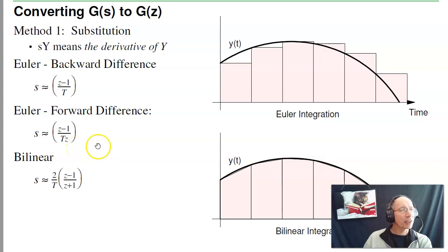Far more accurate is bilinear. What you do is draw out trapezoids. Take the two endpoints, connect them together. What that gives you is one half of the sum of the two times the width. Flipping it to give you 1 over s, the bilinear approximation is (2/T)(z-1)/(z+1).